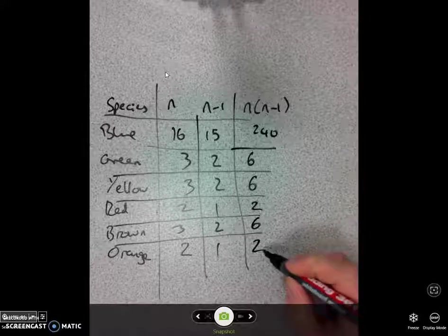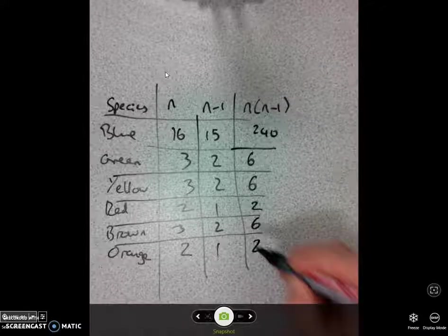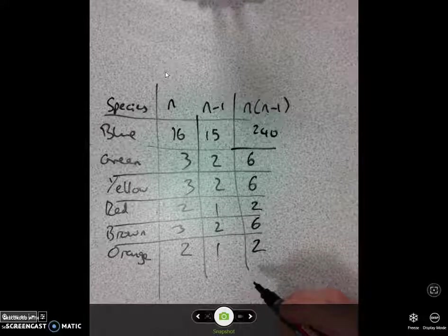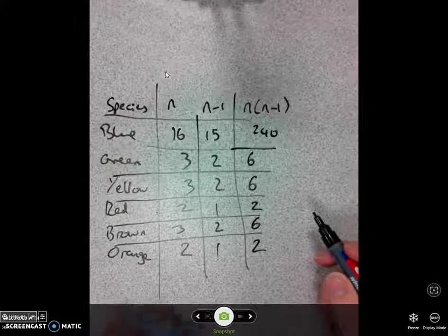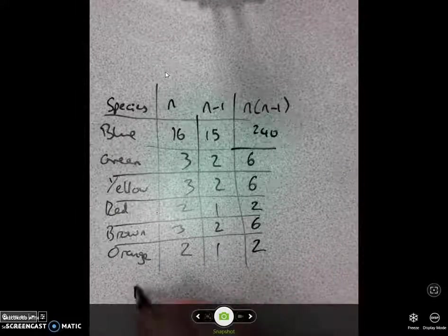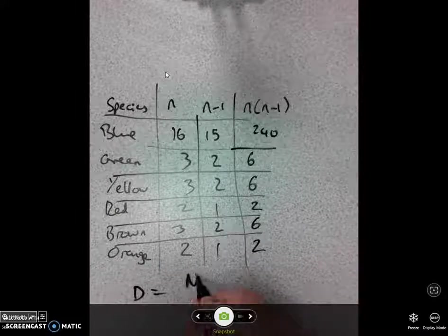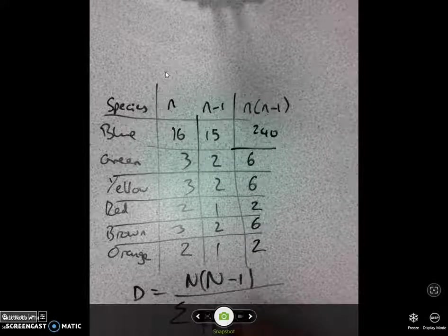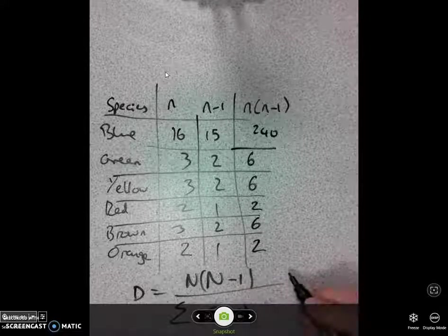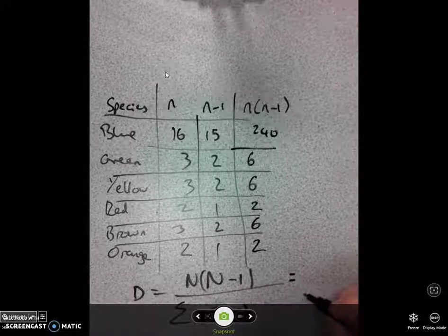Right, so now I've done a little bit of calculation, it's now time to start working out those parts of the equation. So remember what Simpson's diversity index equation was. Okay, let's try and work out what the top and bottom of the equation should be.